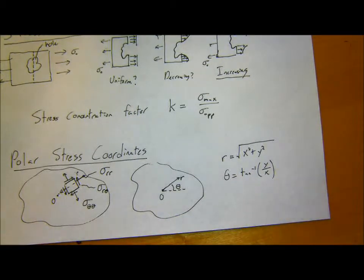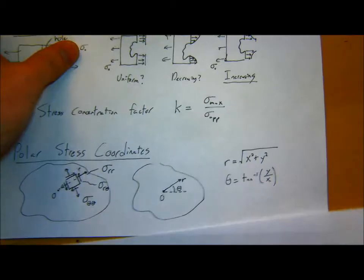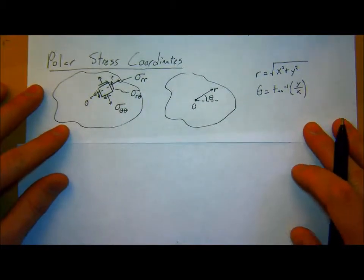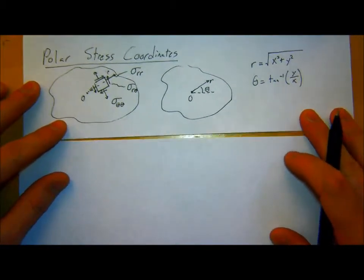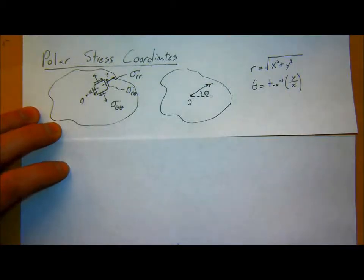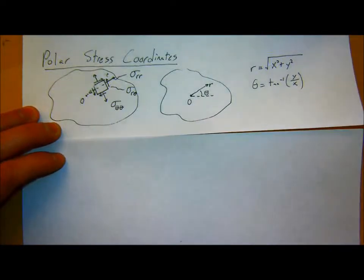In general for the stress transformation, it's this kind of ugly long function — but it'll be useful. Sigma-rr now in terms of our original normal Cartesian stress — sigma-xx, sigma-yy, and shear sigma-xy — is sigma-xx cosine-squared of theta, plus sigma-yy sine-squared of theta, plus two sigma-xy sine-theta cosine-theta.